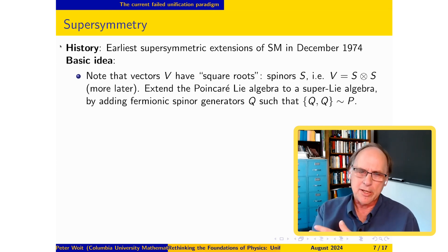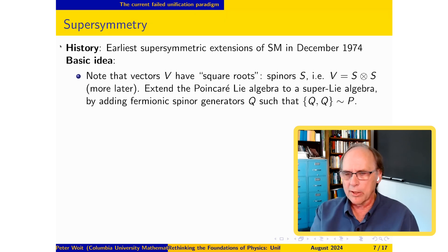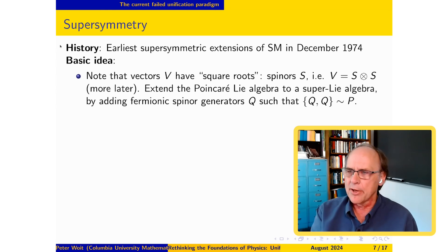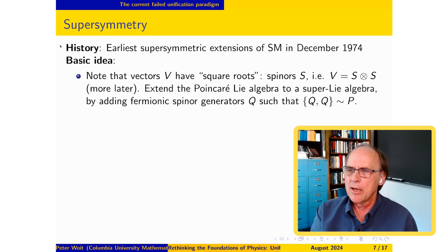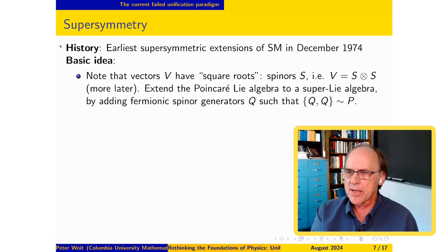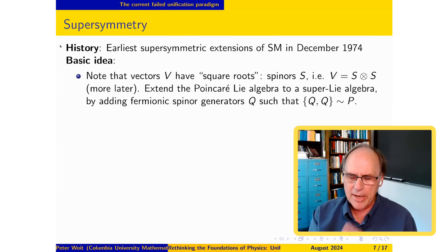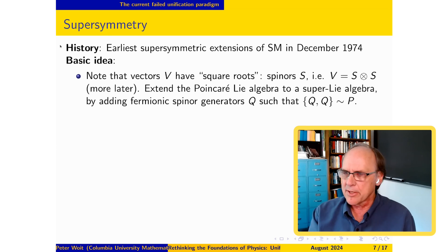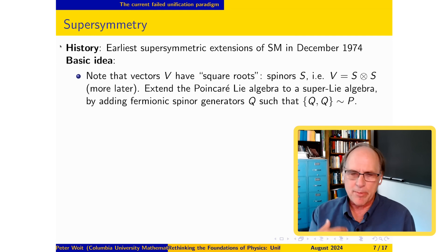If you think of vectors as corresponding to translations, we know that the world locally looks like a vector space of four dimensions, and you can translate in any four directions, giving you corresponding momentum or energy operators. There are also rotations. What supersymmetry says is you should extend the standard story about momentum and angular momentum and how it fits together into the Poincaré algebra — and you should add new generators corresponding to the spinor direction.